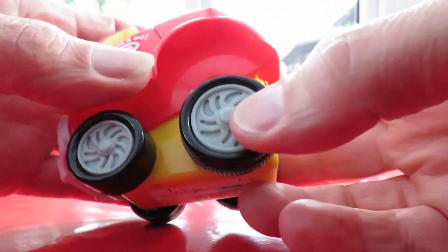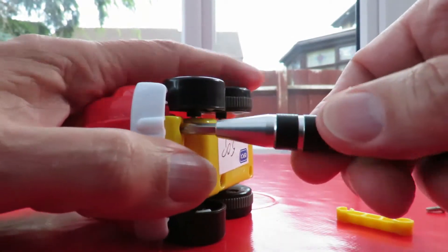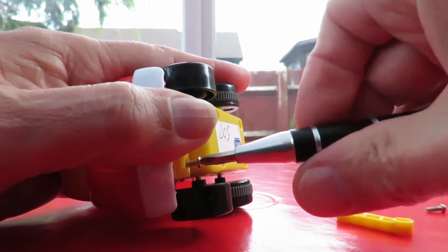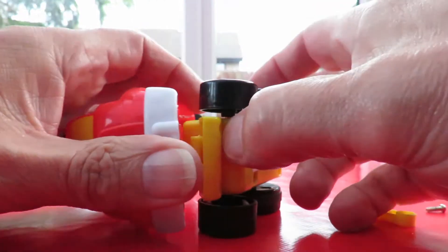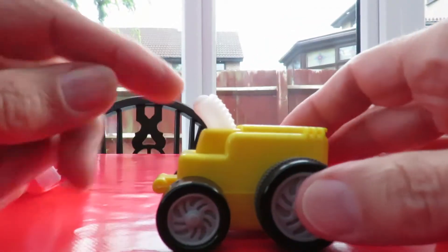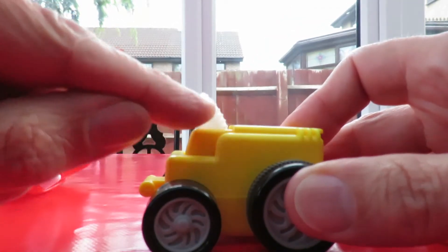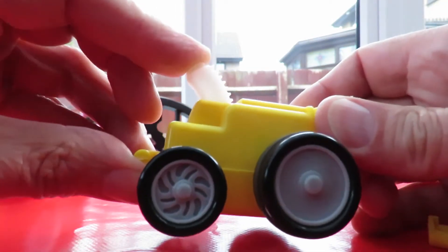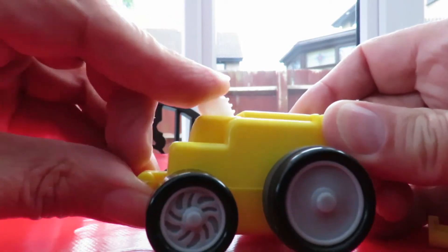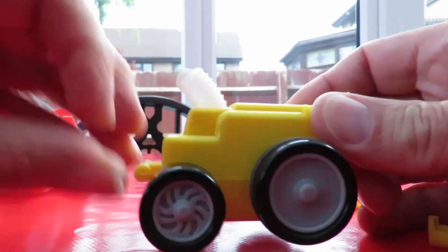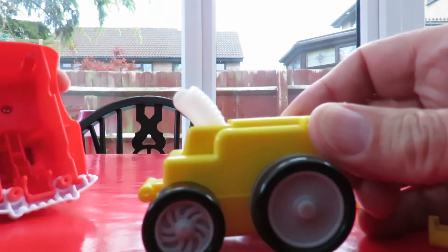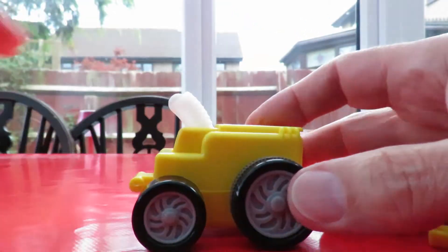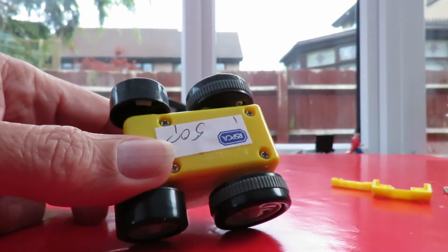That comes off there. There we are. Exactly what I was expecting. A toothed arm or gear and that's just pushed down by you pushing the bodywork down. So let's have a look inside.